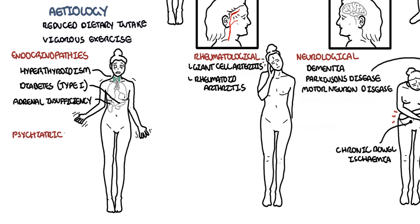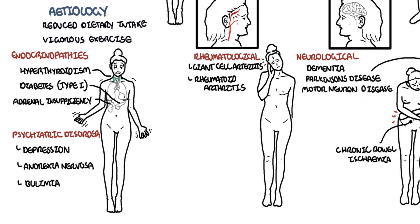Psychiatric disorders, which involve reduced oral intake, include depression, anorexia nervosa, and bulimia. Chronic infections cause weight loss because the body is unwell, there is increased energy expenditure, and sometimes parasites steal the nutrients the body needs. These infections include human immunodeficiency virus, tuberculosis, and helminth infections.